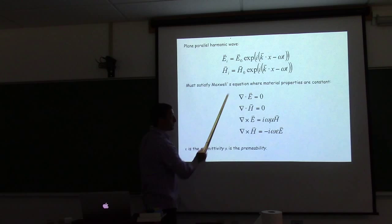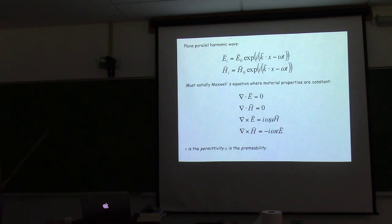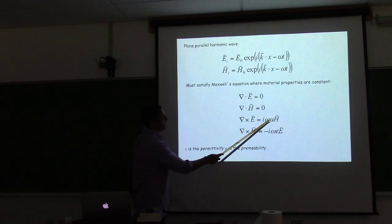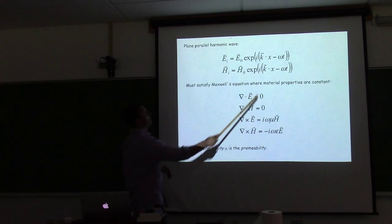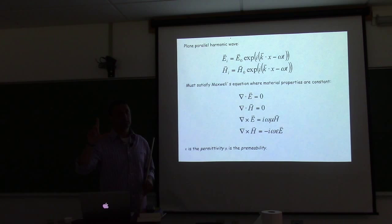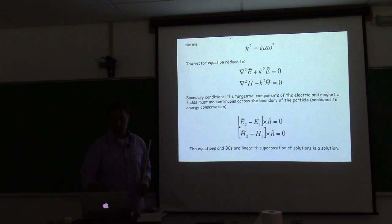These waves must satisfy Maxwell's equations. Here are Maxwell's equations: a set of four equations that tells us everything about how light behaves in the environment. There are two parameters here — permittivity and permeability — which are properties of the material. Omega is the frequency of light, K is information about the wavelength. H is the magnetic field, E is the electric field. Light has both, and they're orthogonal to each other, and both are orthogonal to the direction of propagation.